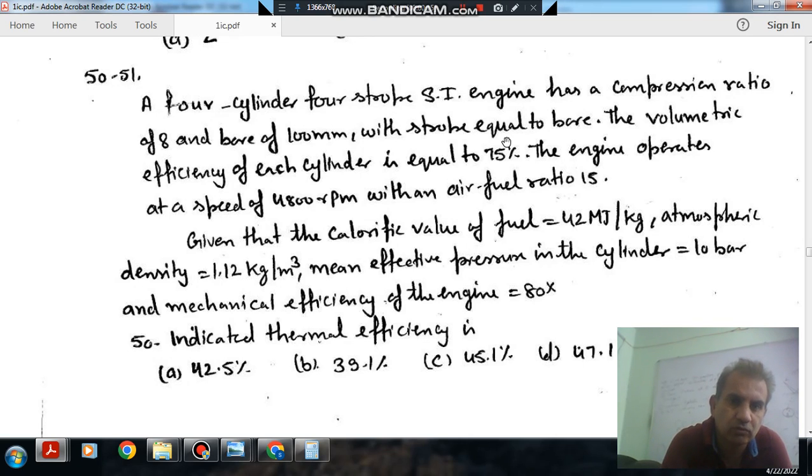A 4-cylinder 4-stroke SI engine has a compression ratio of 8 and bore of 100 mm with stroke equal to bore. The volumetric efficiency of each cylinder is equal to 75%. The engine operates at a speed of 4800 RPM with an air-fuel ratio of 15.